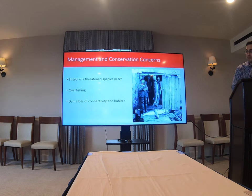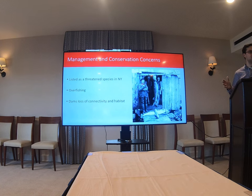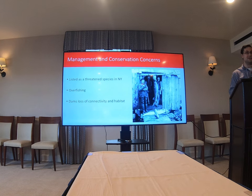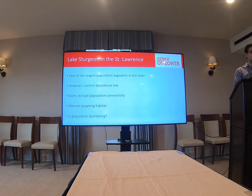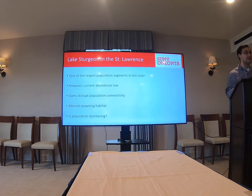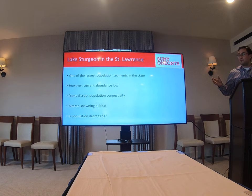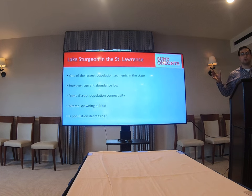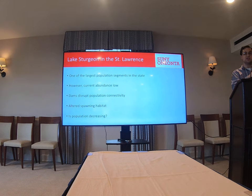Dams are also a big threat that sturgeon face. Sturgeon have a lot of protections now, but dams provide a lot of issues in terms of recovery, really due to loss of connectivity and habitat. Getting more specific, lake sturgeon in the St. Lawrence River represent one of the largest population segments in the state and one of the most stable — which is very cool. But still, looking at historic records, their abundance is very low. Dams disrupt population connectivity: if you take the St. Lawrence River sturgeon population as one big whole and put an impassable barrier in there, you've essentially segregated that population, depending on how many dams you put in between those sub-populations.